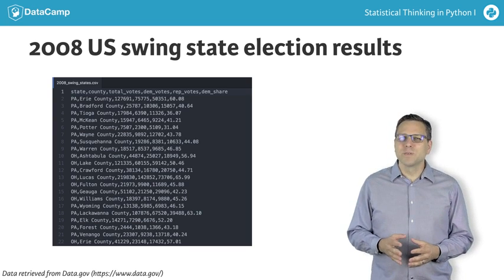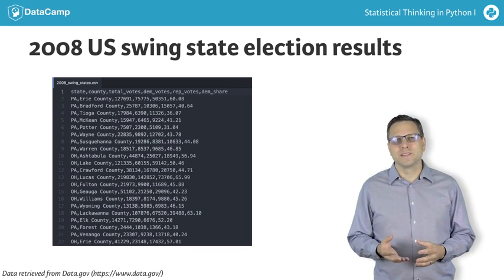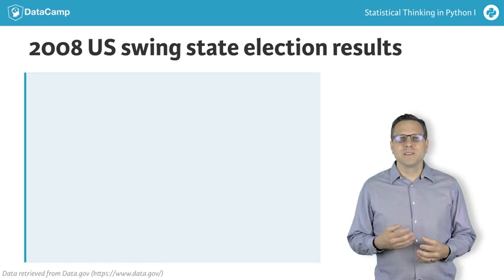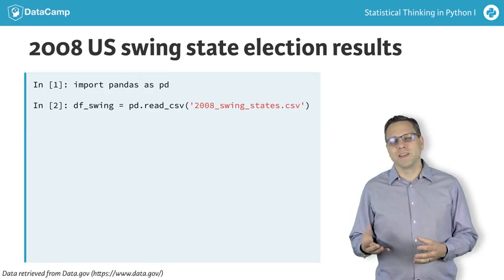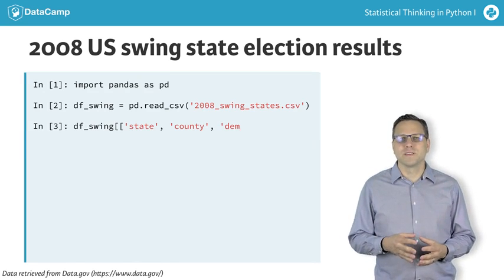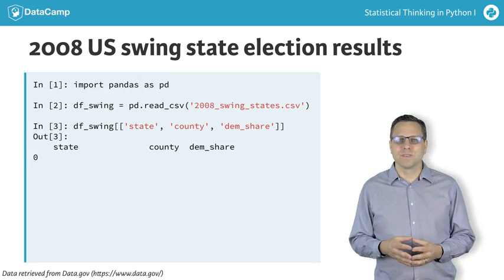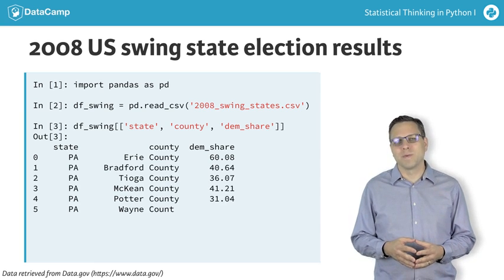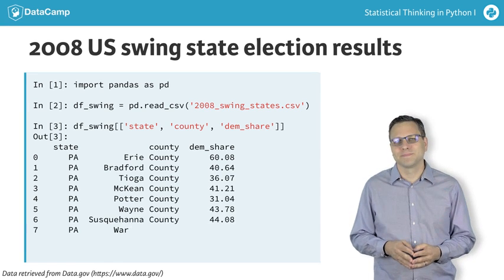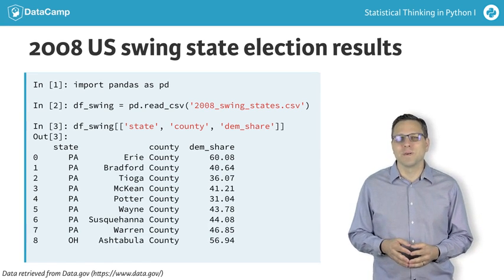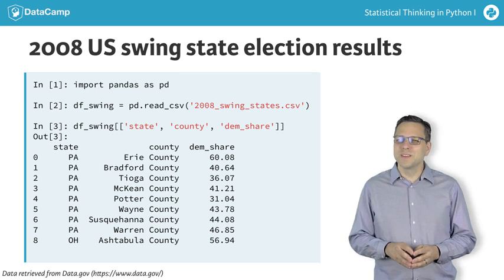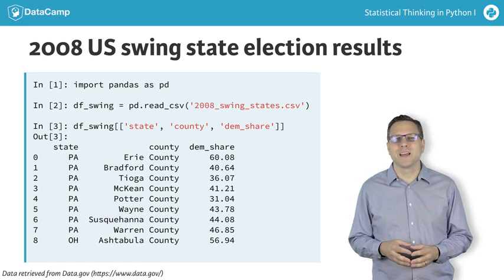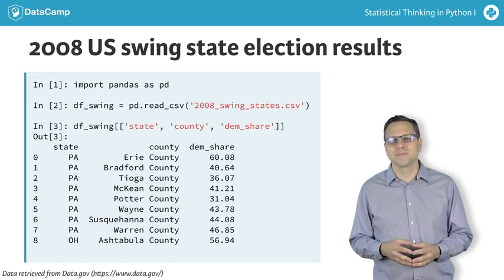They are a little prettier if we look at them in a pandas data frame. In this case, we are only looking at the columns of immediate interest: the state, county, and share of votes that went to Democrat Barack Obama. Now we could stare at these numbers, but I think you'll agree that it is pretty hopeless to gain any sort of understanding from doing this.